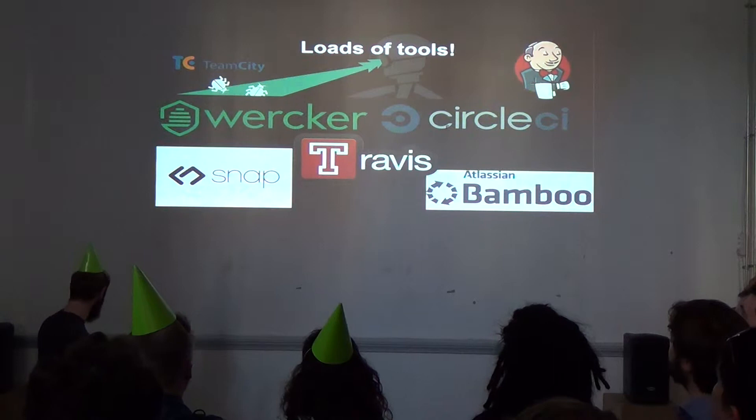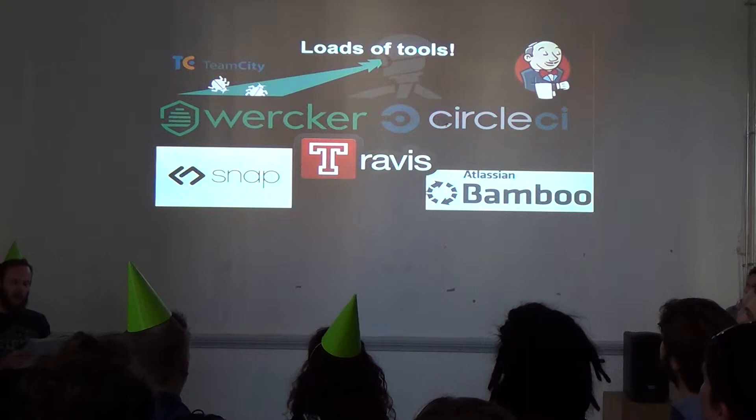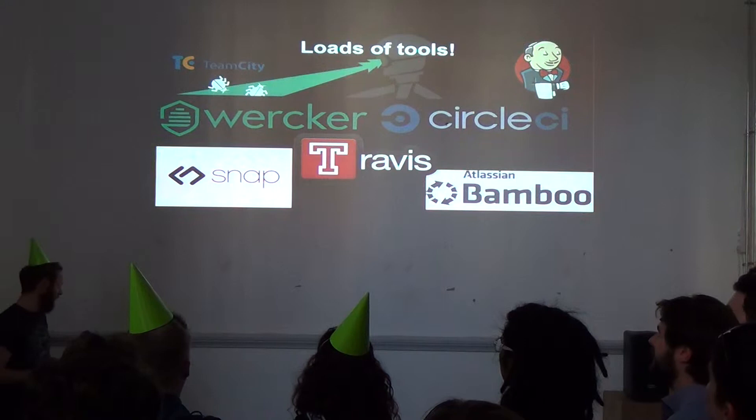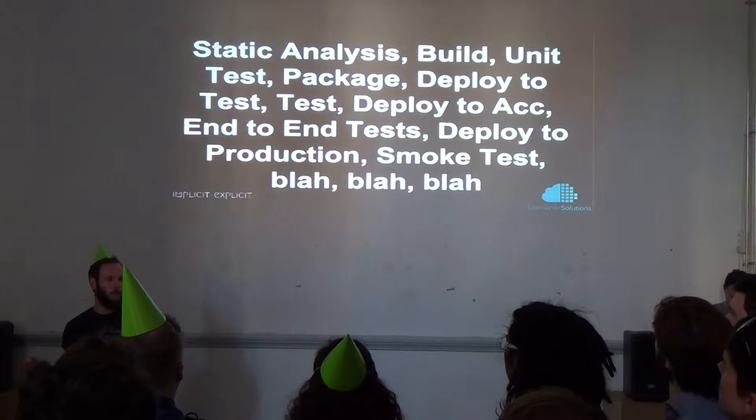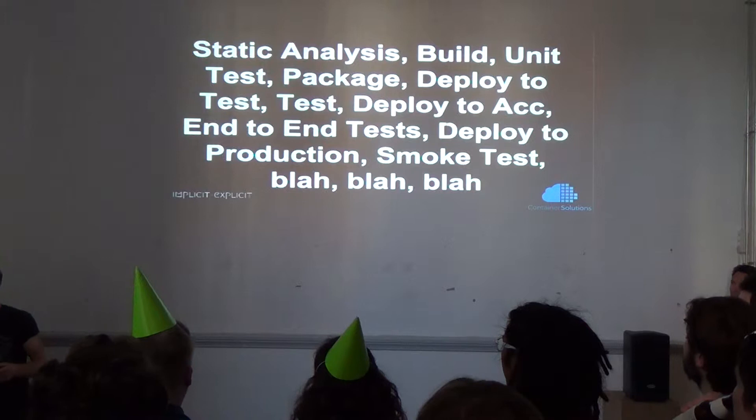If you Google continuous delivery or continuous integration, you're going to find loads of tools. I made a list from a quick Google: Jenkins, Travis CI, Drone CI, Snap CI, Verka, Team City, Circle CI, Bamboo, Quick Build, and probably about 20 others. They all do very similar things — static analysis, build things, deploy things, deploy something here and test it, deploy something there and test it, run some smoke tests, thousands of different things like this.